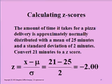Here is an example problem in calculating z-scores. The amount of time it takes for a pizza delivery is approximately normally distributed with a mean of 25 minutes and a standard deviation of 2 minutes. Convert 21 minutes to a z-score.